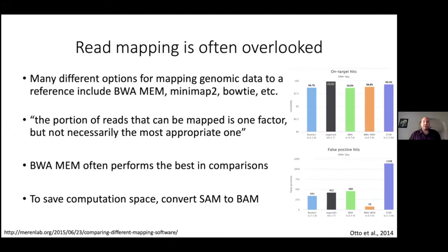Mapping to the genome is often overlooked in a lot of studies, but there are many different options for mapping genomic data to a reference genome. This includes BWA-MEM or the new version BWA-MEM2, minimap2, Bowtie, etc. The proportion of reads that map to a genome is one factor, but it is not necessarily the most appropriate one to consider. A paper from 2014 looked at many different options and examined the proportion of on-target hits but more importantly the number of false positive hits. BWA-MEM often outperforms the other options in head-to-head comparisons; in this case it specifically had the lowest rate of false positives.